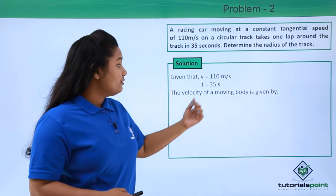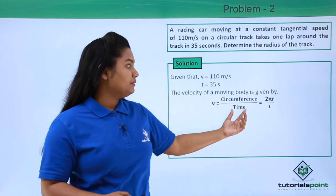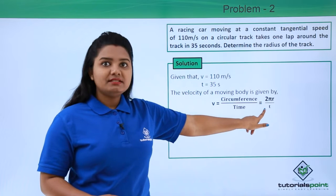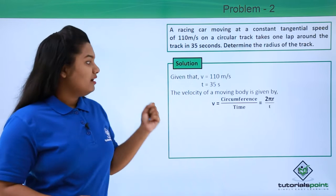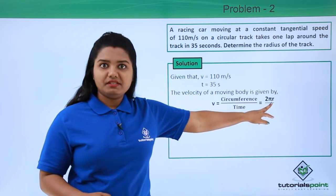So the velocity of a moving body in a circular track is given to be the circumference divided by the time taken, which equals 2πr divided by t, because circumference is given by 2πr. Now here we need to find what is the radius of the circular track.